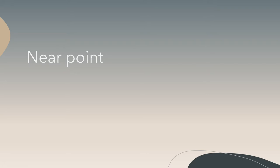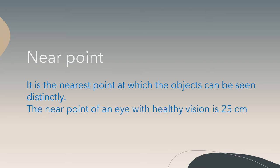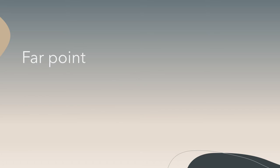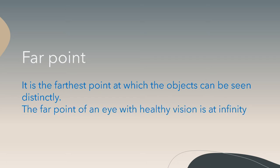Before going into detail about defects of the eye, let's understand near point and far point. The near point is the nearest point at which objects can be seen distinctly — for a healthy eye, this is 25 centimeters. The far point is the farthest point at which objects can be seen distinctly — for a healthy eye, this is at infinity.